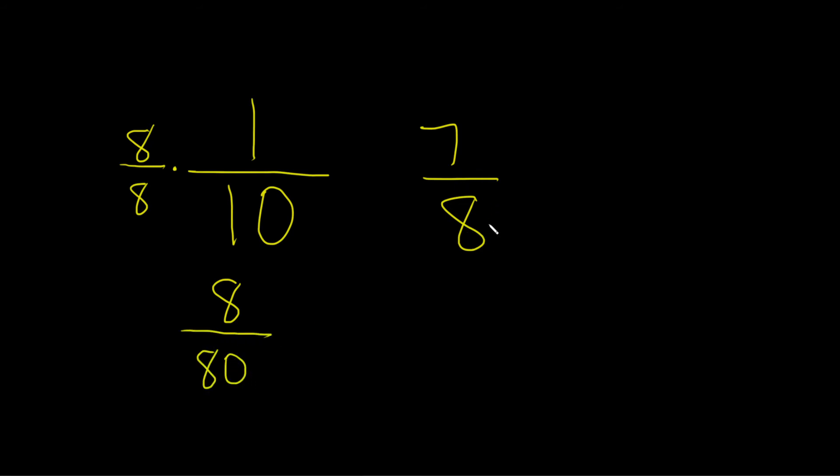Then you go over here and you do the same thing. You want there to be an 80 here, so you're missing a 10. So you put a times here and you multiply by 10 over 10.